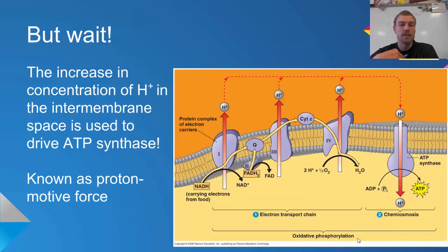How this actually does work: the movement of the electrons is pumping the protons from the matrix, which is on the inside of the mitochondria, into the intermembrane space, which is between the two membranes. We're creating a high concentration of hydrogen in that space.